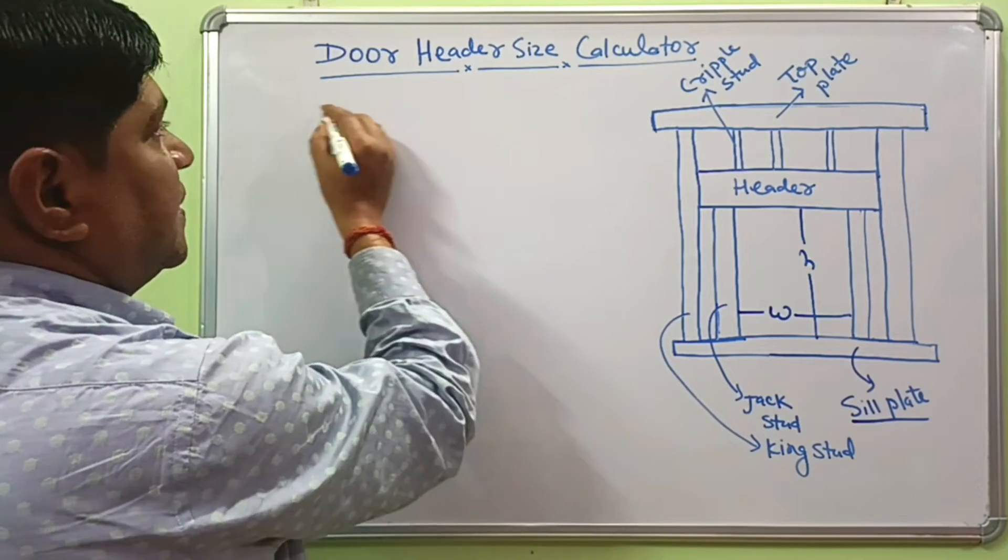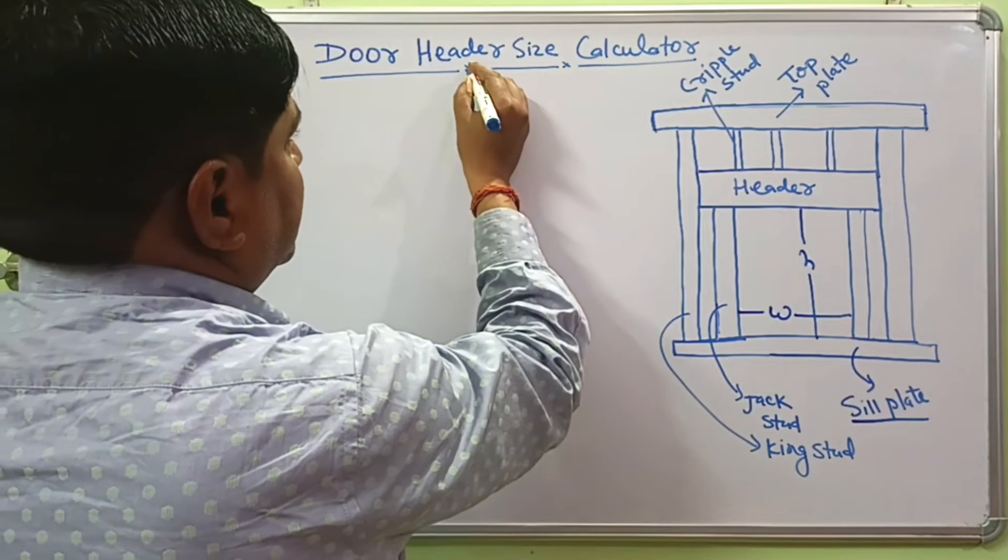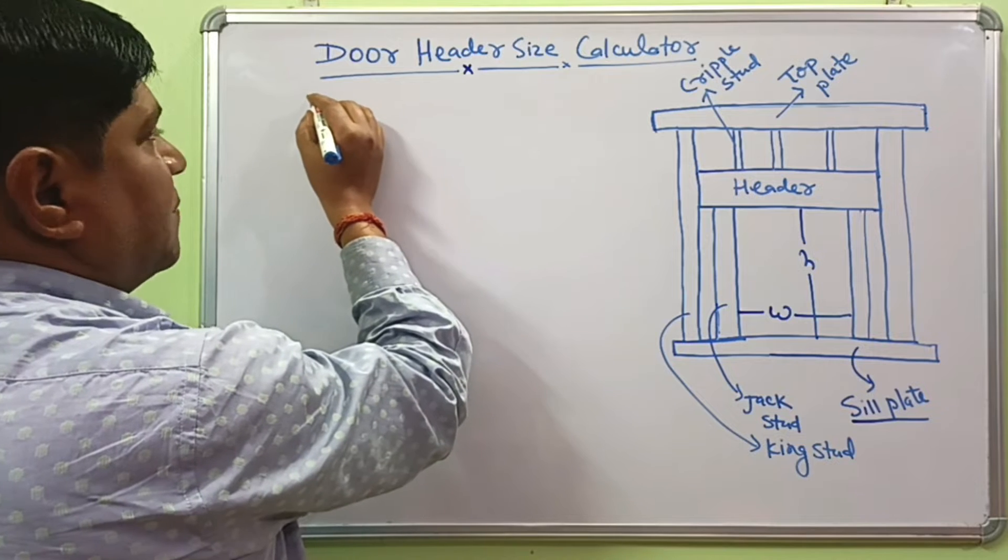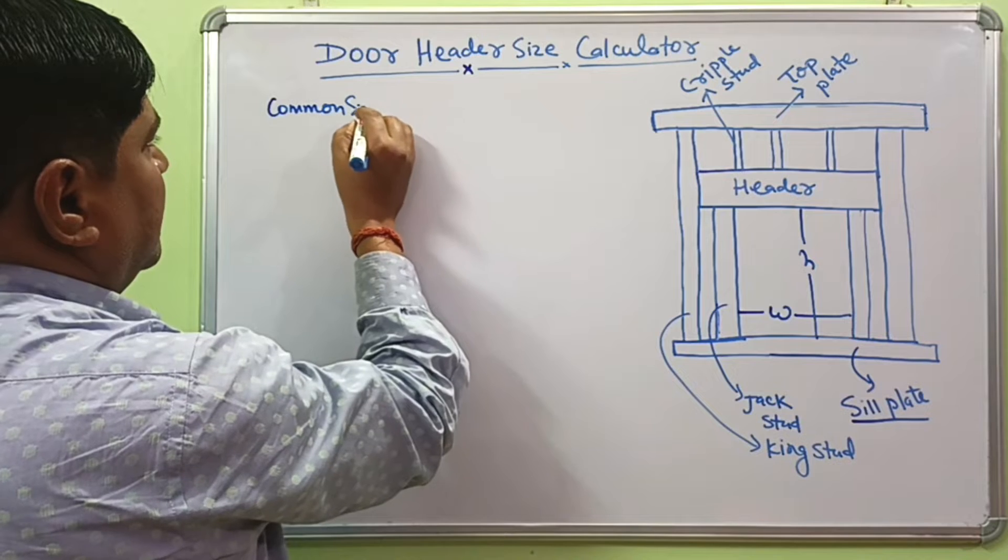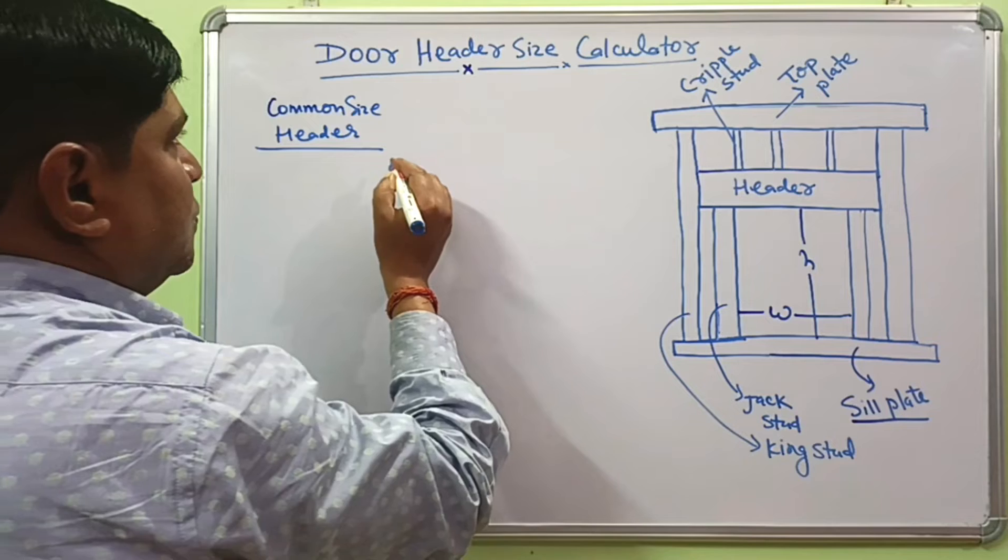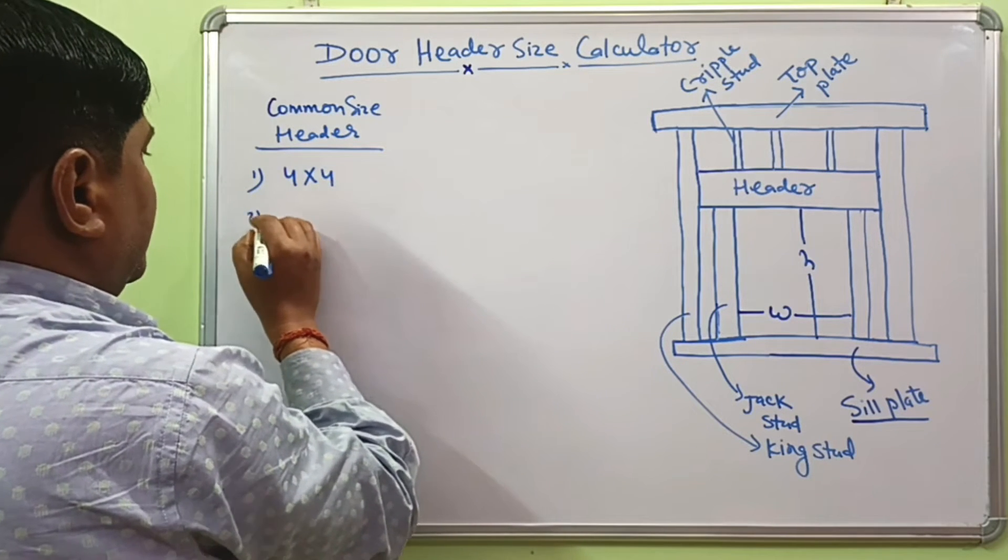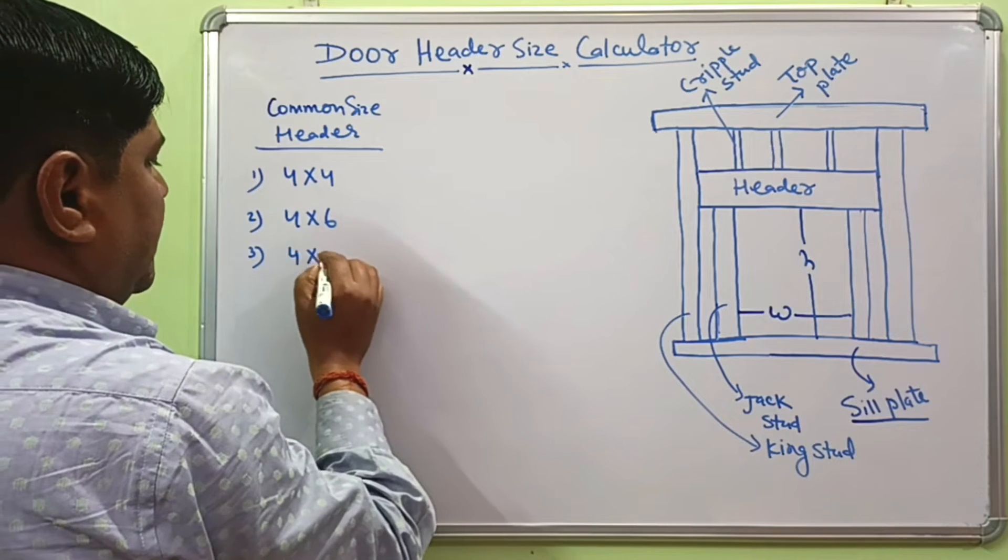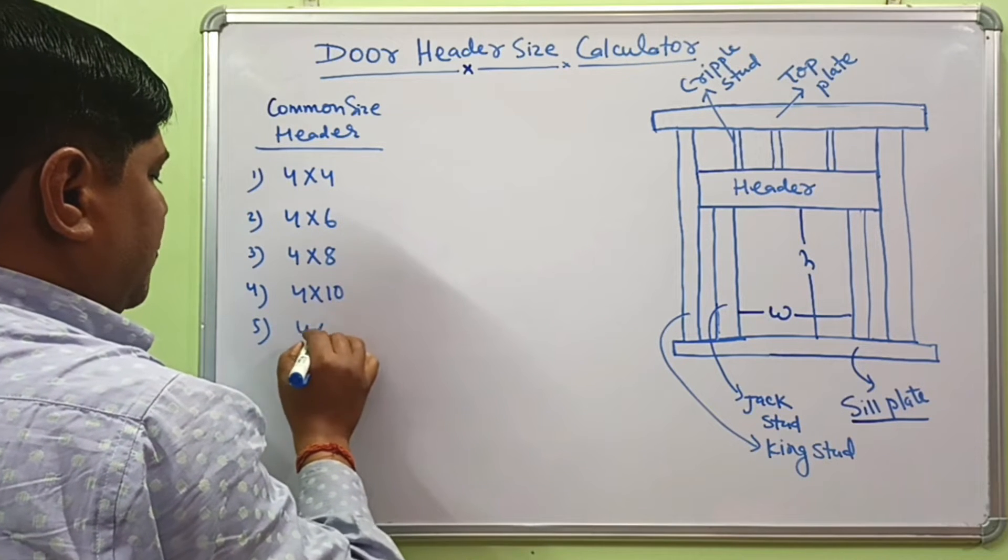And how we consider what is the different size of header and how you can determine header span. Now door header size calculator helps to determine correct size of header. The common size header required for door opening is 4 by 4, 4 by 6, 4 by 8, 4 by 10 and 4 by 12.